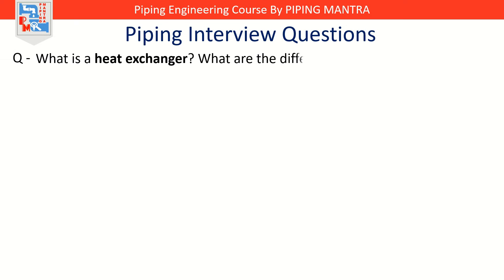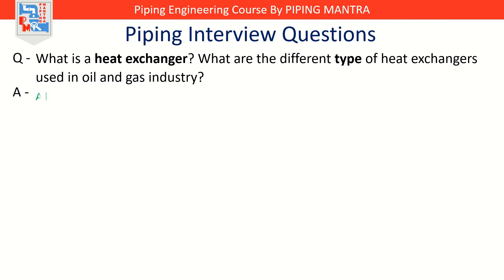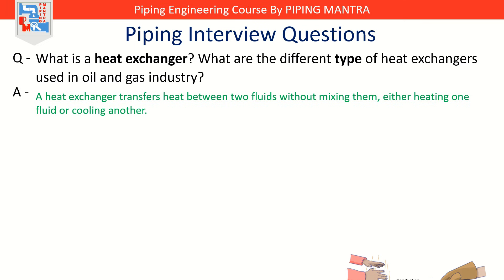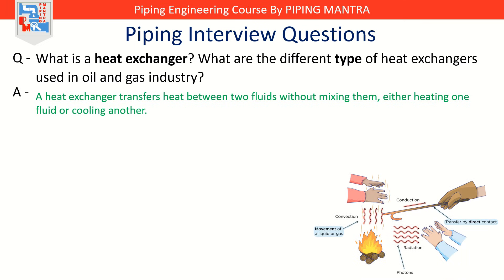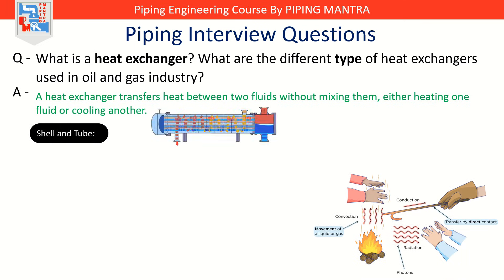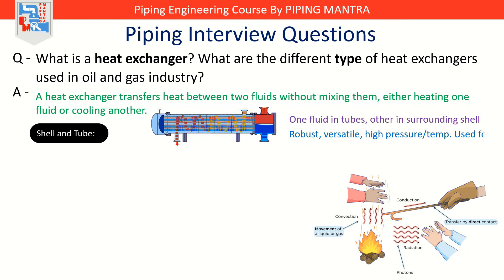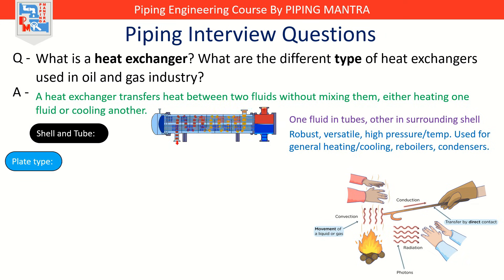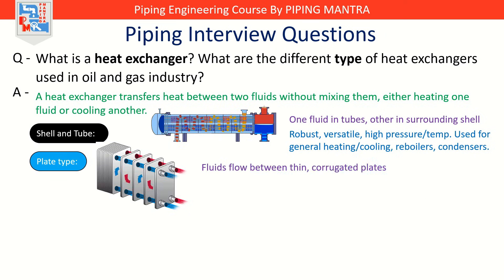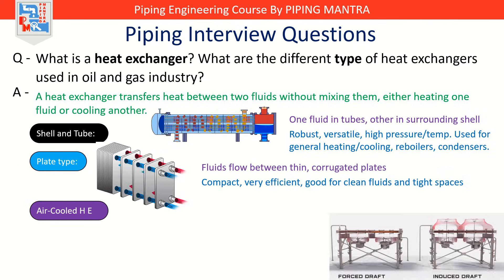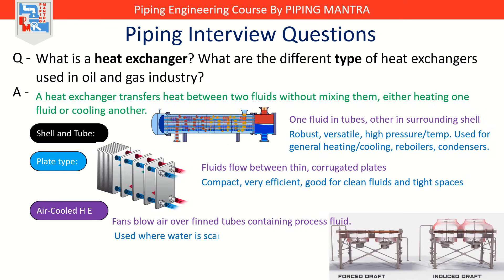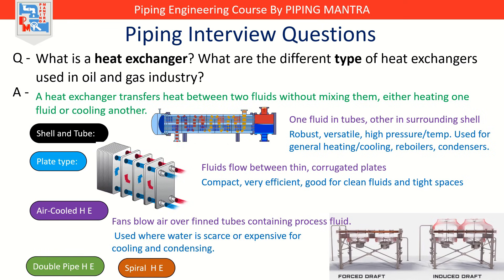What is a heat exchanger and what are the different types? A heat exchanger is simply a device that transfers heat between two fluids without mixing them. Types you will see in oil and gas are: Shell and Tube — one fluid inside tubes, the other around them in a shell, very robust and great for high pressure or temperature. Plate type — fluids pass between thin corrugated plates, compact, very efficient, and perfect for tight spaces. Air cooler — fans blow air over finned tubes, great when water is scarce. Double pipe and spiral — used for special applications, smaller duties, or viscous fluids.